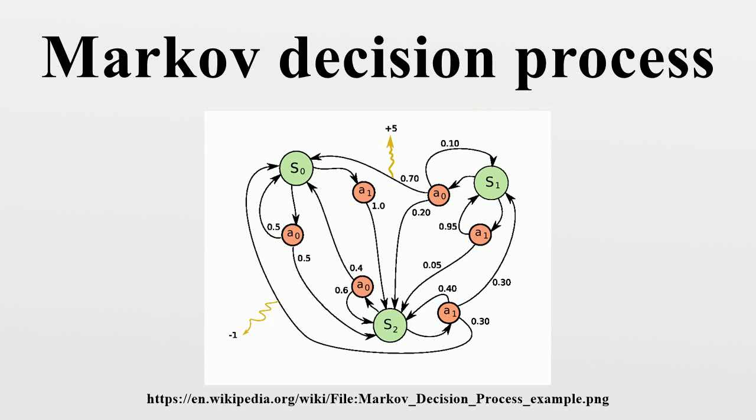Markov decision processes provide a mathematical framework for modeling decision-making in situations where outcomes are partly random and partly under the control of a decision-maker.